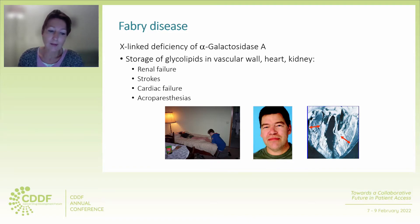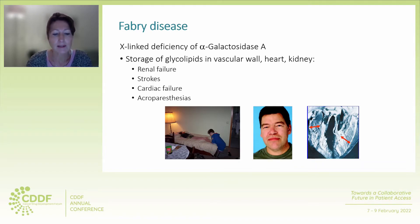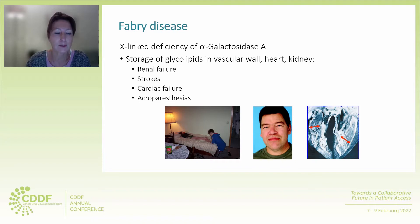The disorder that came after Gaucher was Fabry disease, which is quite a different disorder, although the stored lipid is quite similar. The storage is in other cells — in vascular cells, in the heart, in the kidney — so it has more of a vascular type of expression with renal failure, strokes, cardiac failure, and acroparesthesias. You can see here a boy comforting his brother who has very painful acroparesthesias in his feet, and the typical facial features of a Fabry male and a thickened heart that you can see in Fabry disease.